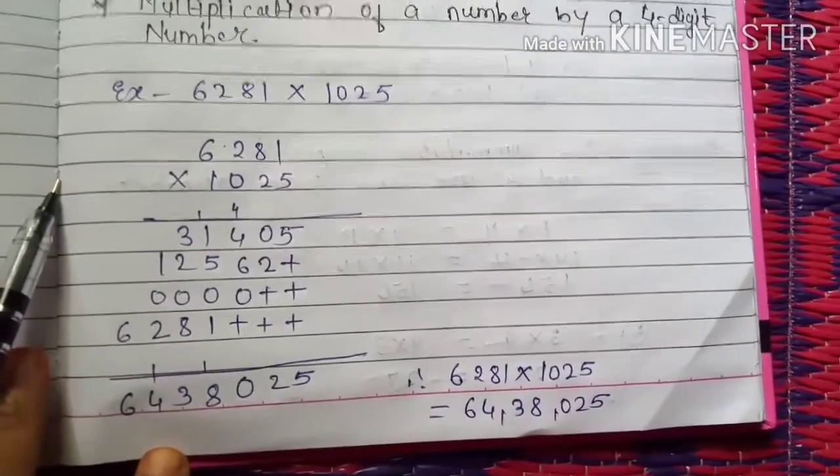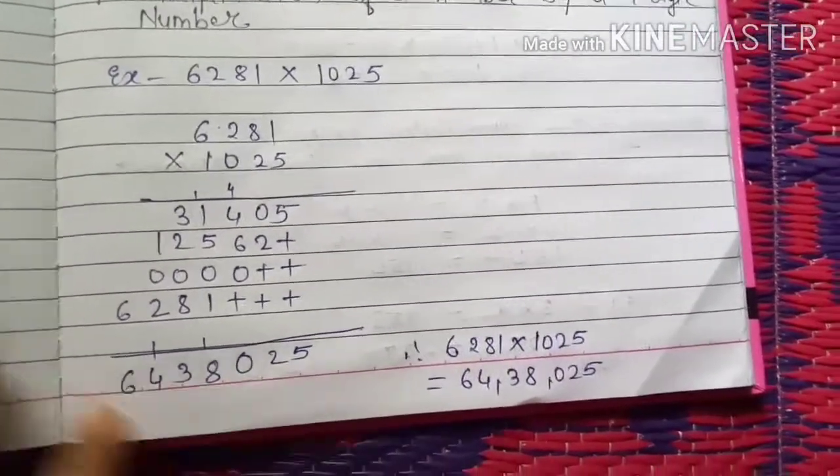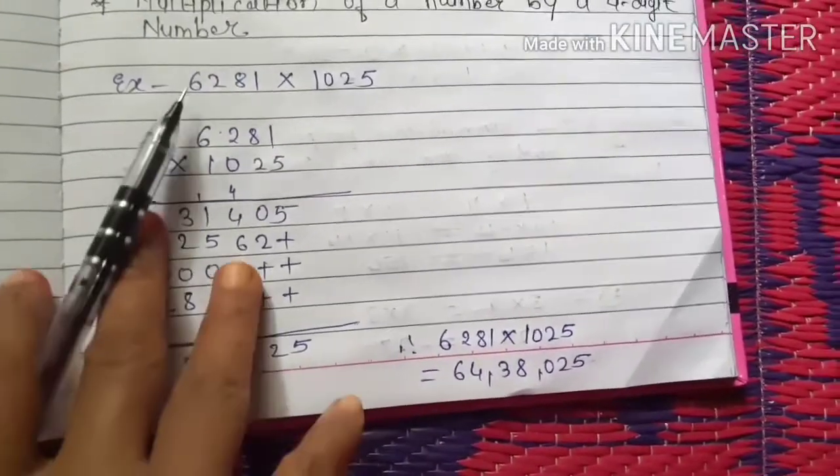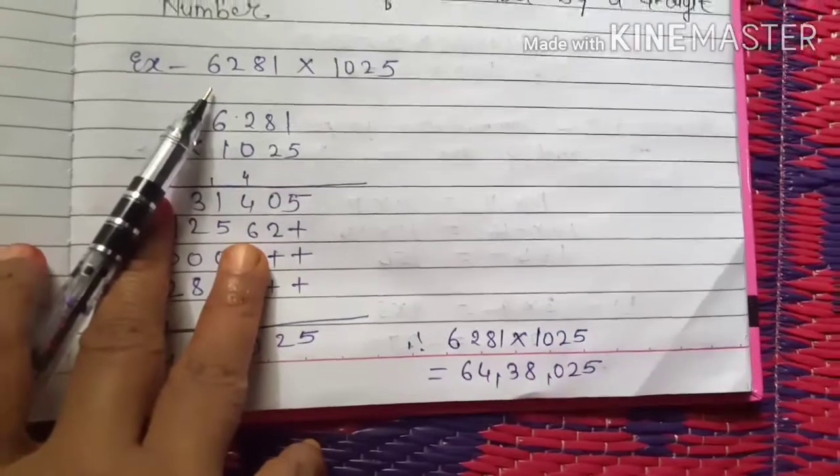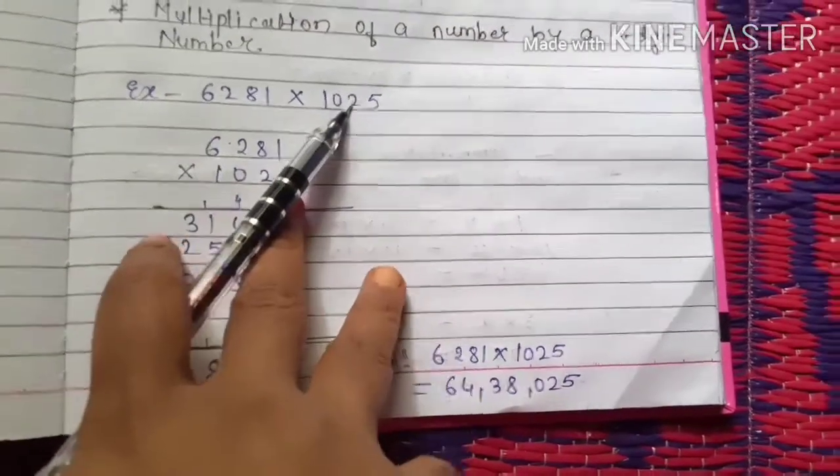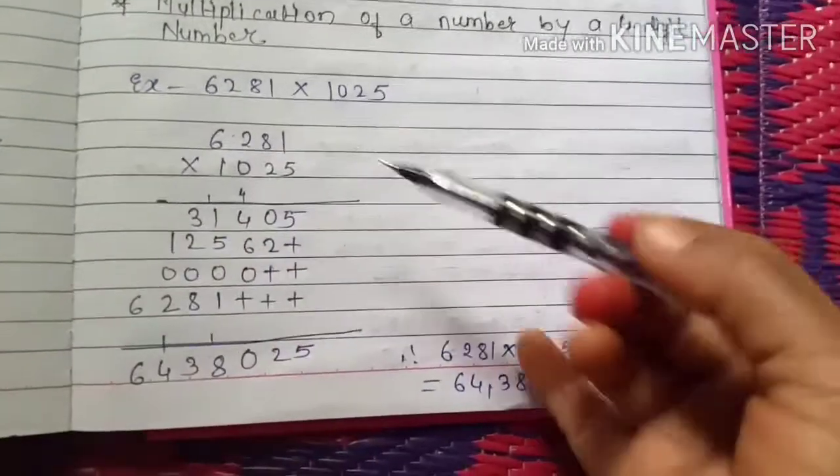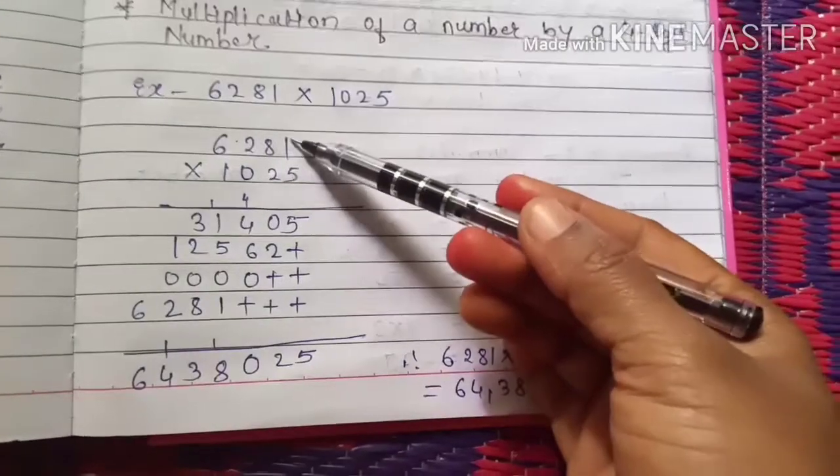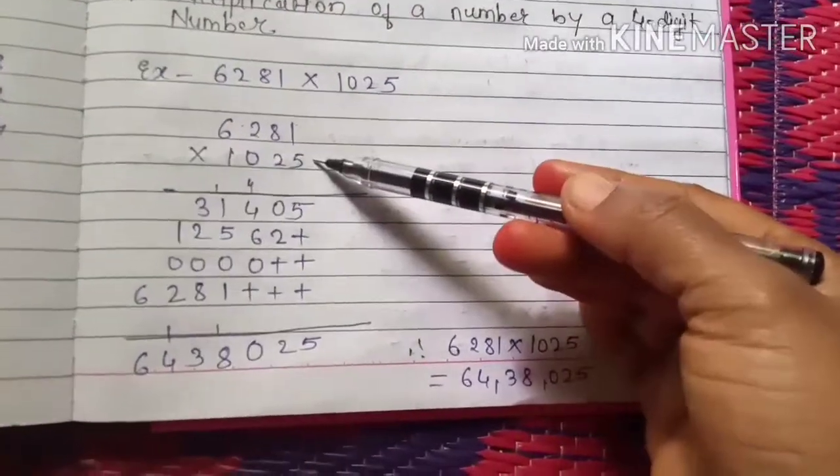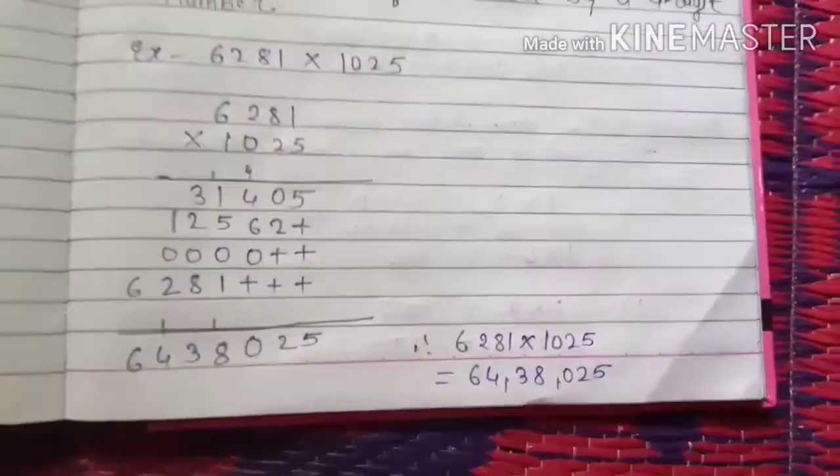See here children, as I told you in previous video, there are some steps. There are total four steps to multiply any number. The same way we have to apply these steps here. See here, I have taken one example that is 6281 into 1025. The multiplier is also four-digit number and multiplicand is also a four-digit number. So write down the first number upside, then put a multiplication sign, then the four-digit number downside. Multiplication always starts from the ones place.